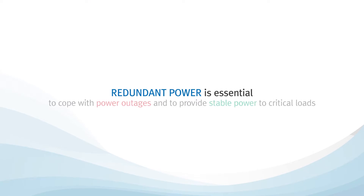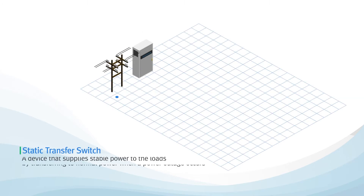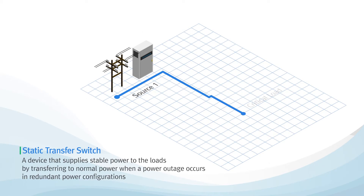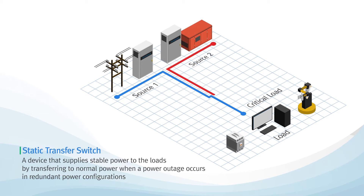Redundant power is essential to cope with such power outages and provide stable power to critical loads. The static transfer switch normally supplies Source 1 to the loads, and when a problem occurs in Source 1, it transfers power to Source 2 so that the power supplied to the load is not interrupted.